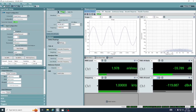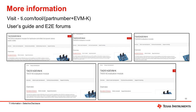The screen now shows the setting to measure the DAC dynamic range with the APX-555. Channel 1 is now showing 120 dB dynamic range. This TAC-5242 EVM quick start video could also be applied to similar devices like TAD-5242, TAD-5142, TAA-5242, and TAC-5142 EVM. For more information, please visit ti.com/tool/[part number] and EVM-K for the detailed user guide, and the E2E forums for any questions you may have. Thank you.